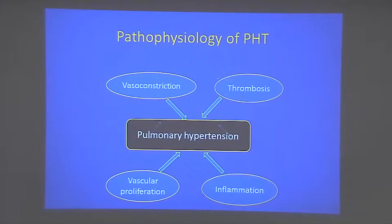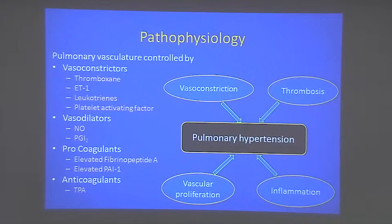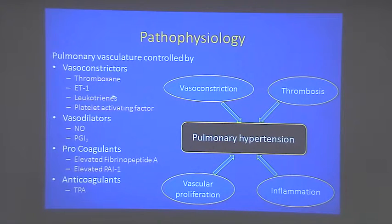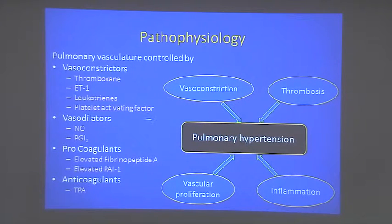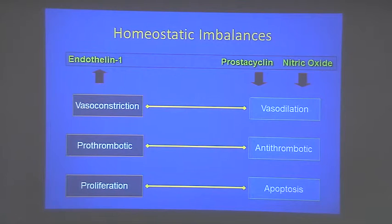Coming to the pathophysiology of pulmonary hypertension, four primary mechanisms are involved. Various vasoconstrictors operate — thromboxane A2, endothelin-1, leukotrienes, platelet activating factor — which also act as pro-proliferative factors. The interplay between vasoconstrictors and vasodilators, pro-coagulants and anti-coagulants, and growth factors triggering proliferation and inflammation — all these together produce pulmonary hypertension.